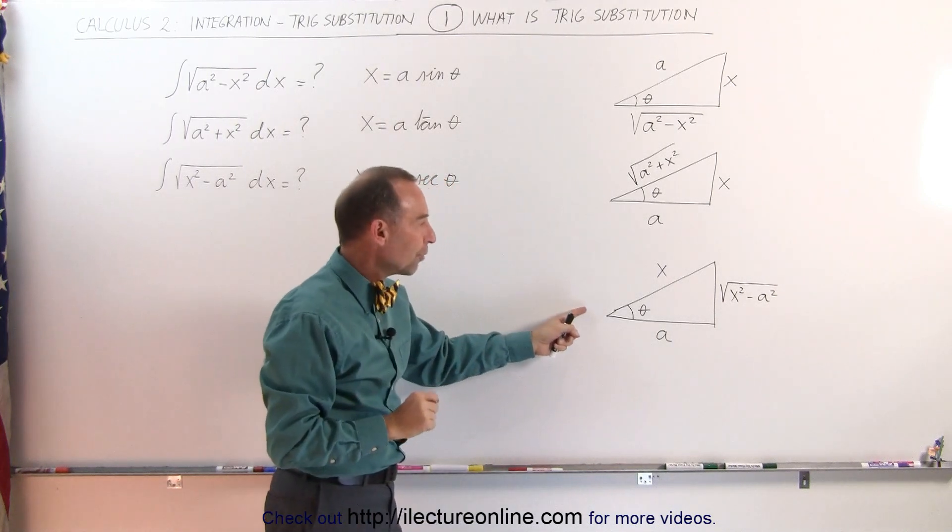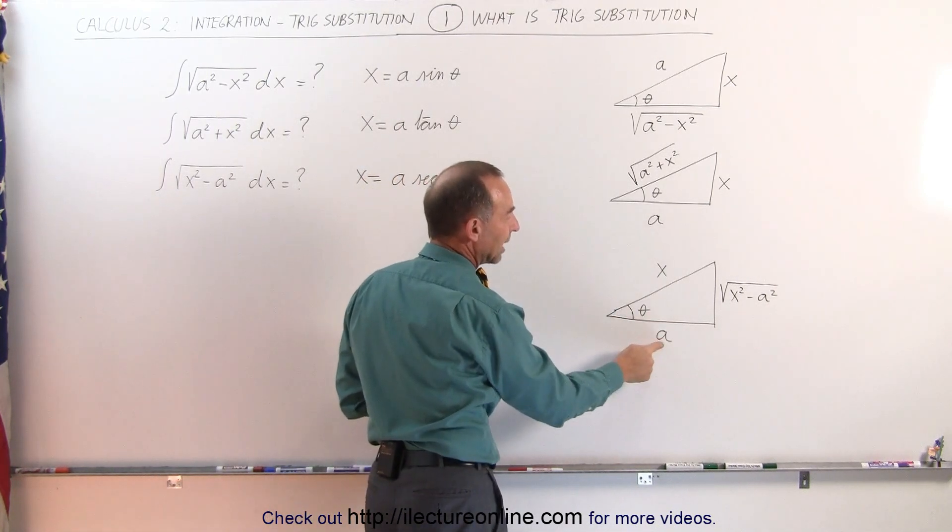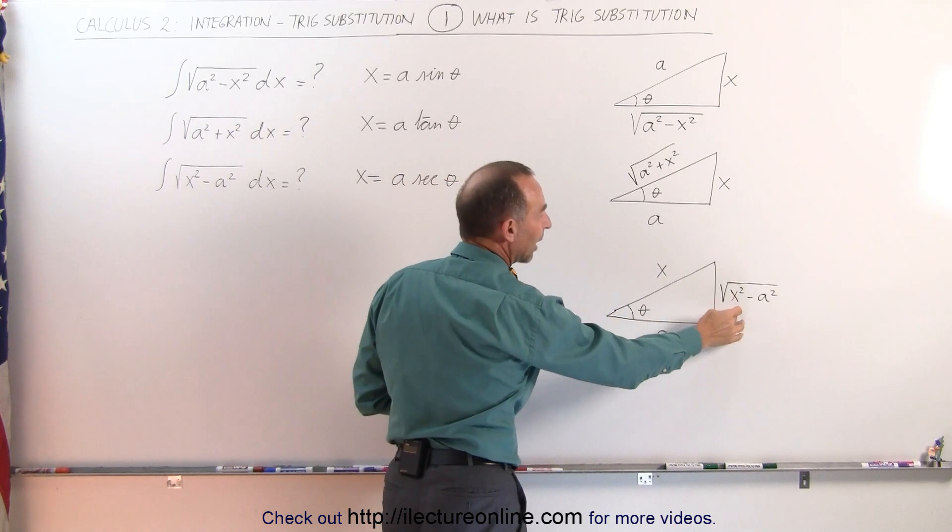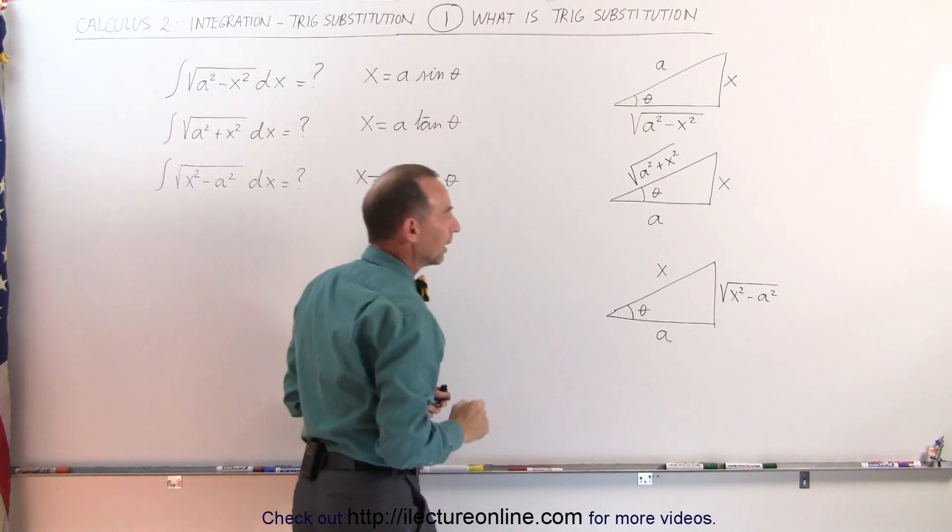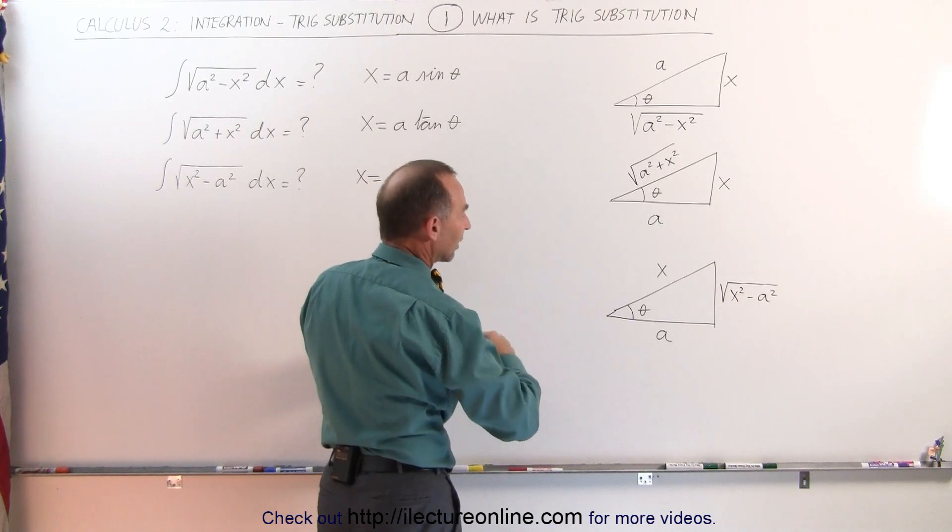And finally the third triangle: notice that if we let x be the hypotenuse and a be the adjacent side, then the opposite side becomes the square root of x squared minus a squared. Now we realize that if we take the cosine of this angle,